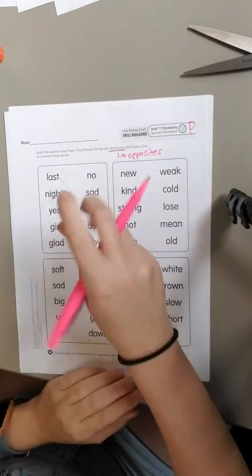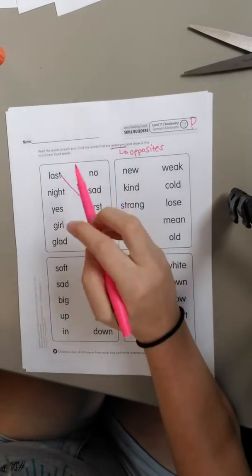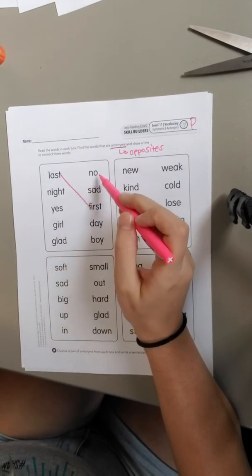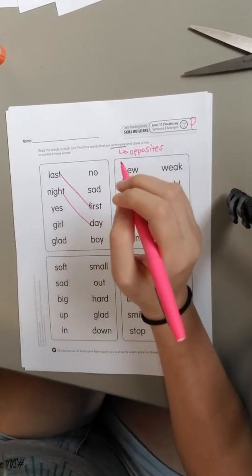So they've done the first one for us, last and first, and they drew a line. Okay, so then here we would look for night, no, sad, day. Ooh, night and day are opposites, so I'm going to draw a line there.